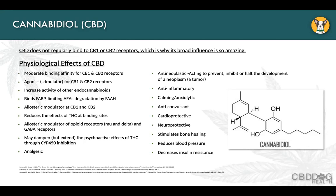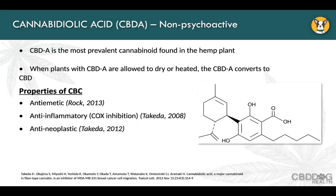CBD doesn't completely bind the receptor, but ends up assisting compounds native to the body in doing their work more effectively. In the hemp plant itself, the precursor CBDA is the most prevalent cannabinoid found and has some different properties. It's a little less effective than CBD, but when converted through drying, heating, or aging it converts into the more active form, CBD. However, CBDA has some interesting properties of its own, which is why researchers started looking at CBDA-type compounds.